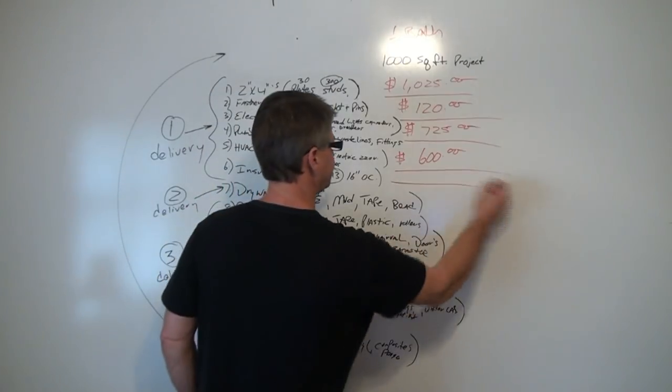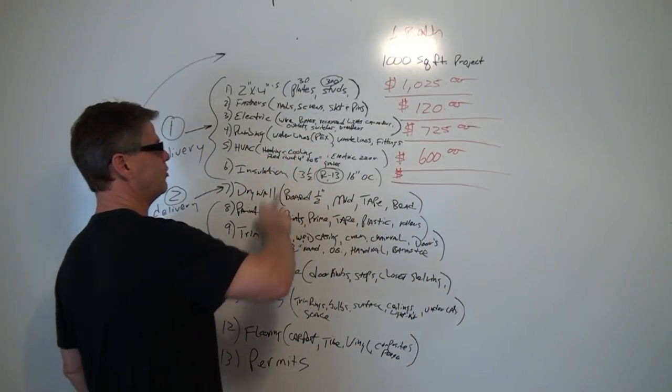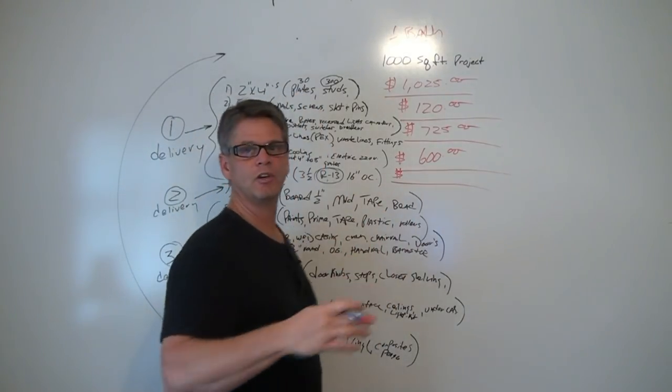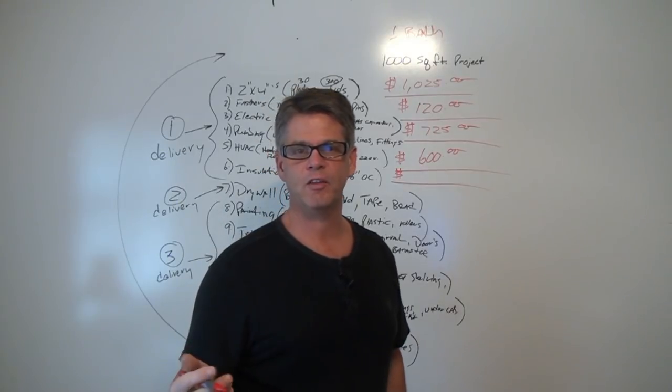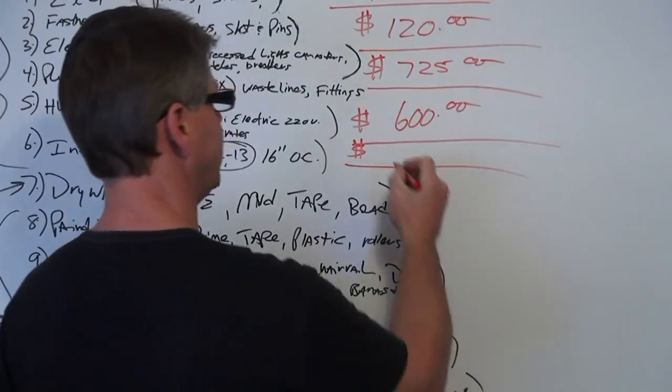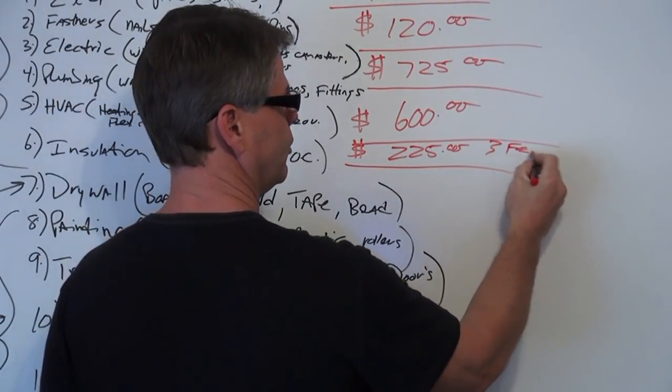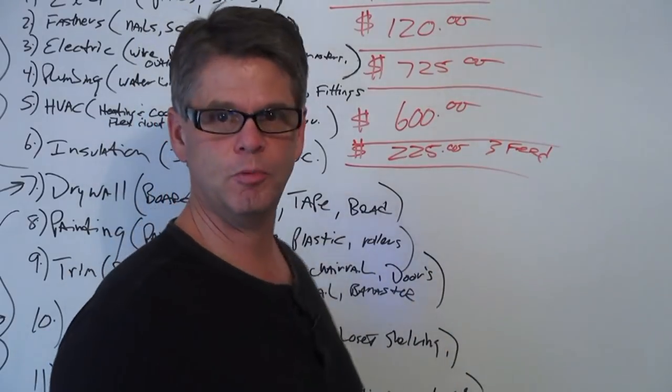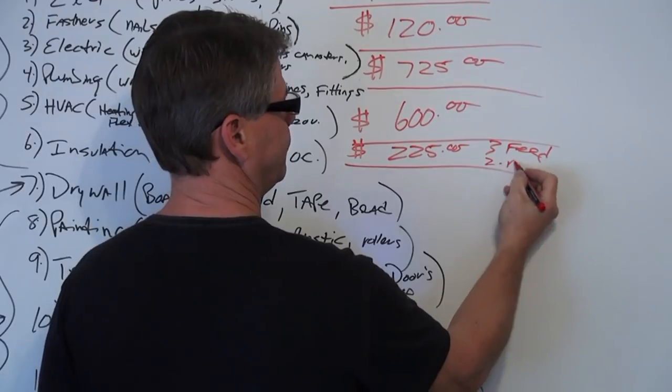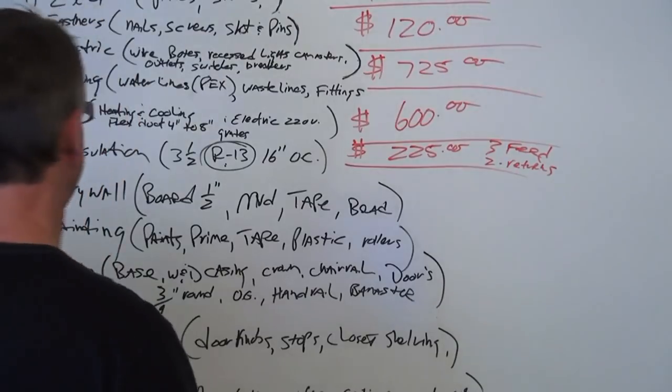Then we got our HVAC. That's all of our flex lines. We talked about yesterday, our flex duct, our four inch, six inch, seven, eight inch flex duct, our grates, and all the parts to put that together. And it wasn't as expensive as I thought it was either. It was $225 for a basement. And that was for three feeds. Those are what bring the air into the basement, the heat and the AC, pump it in. And for two returns. $225. Not too bad.